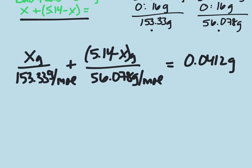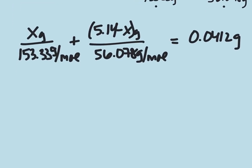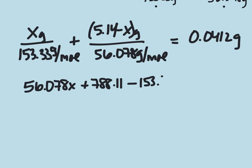When we simplify this, we're going to end up with 56.078 X plus 788.11 minus 153.33 X equals 354.26. Solving for X, we end up getting that X equals 4.46 grams.